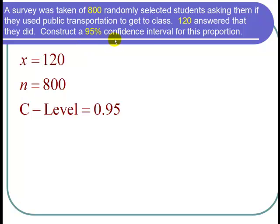We want a 95% confidence interval. That's called the C-level on the calculator. So the C-level is 0.95.